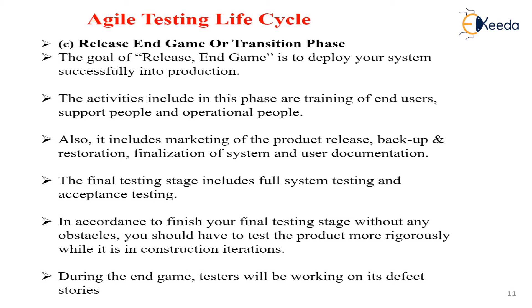Then we have the Release, End Game, or Transition phase. This means deploying your system successfully into production. This activity includes training of the end users, support people, and operational people. The end user is the customer, support people are those who help with the product, and operational people help you work with it. It also includes marketing of the product, release, backup, restoration, finalization of the system, and user documents - manuals, help guides, and related websites.